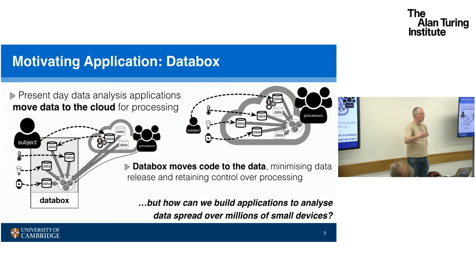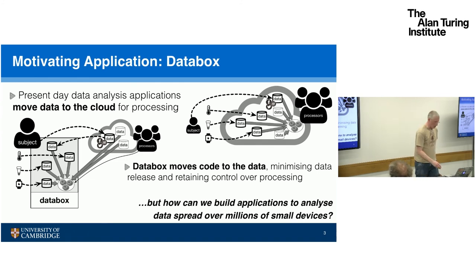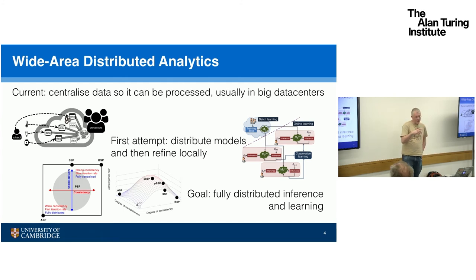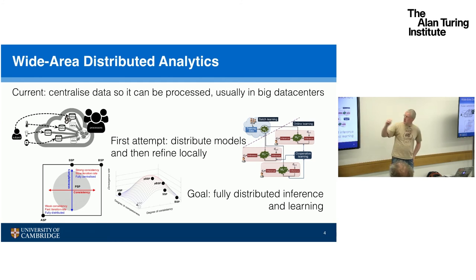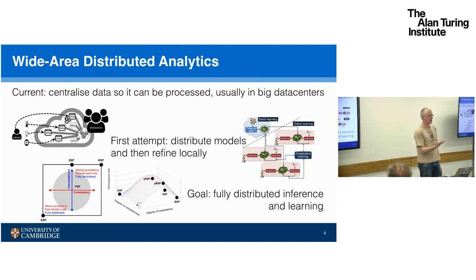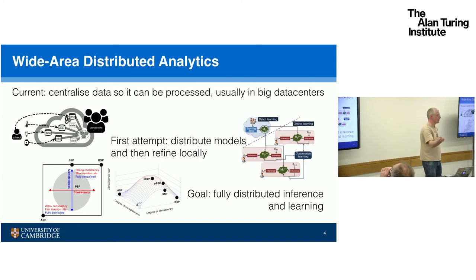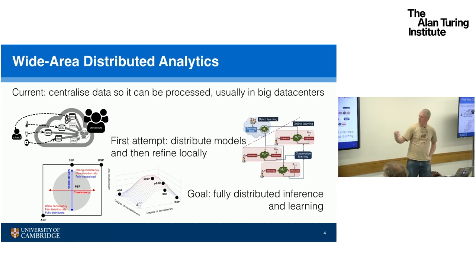This means we want to start building analytics applications that can analyse data spread across potentially millions of small devices, rather than centralised into some large cloud service. We've gone through several iterations of this within DataBox, and where we're moving to is properly distributed inferencing and learning. The starting point was centralising data for processing. We did work on distributing models and then refining them locally — you do an initial training phase using a small set of centralised data, then distribute the model to all the little data boxes and have it refine itself locally using data specific to the data subjects involved.